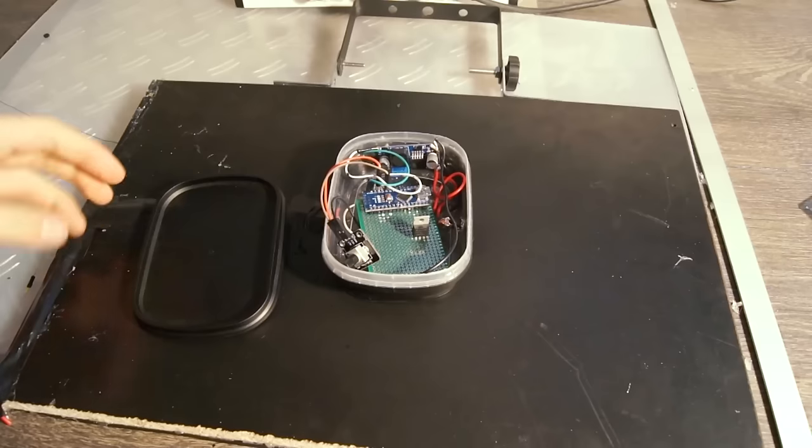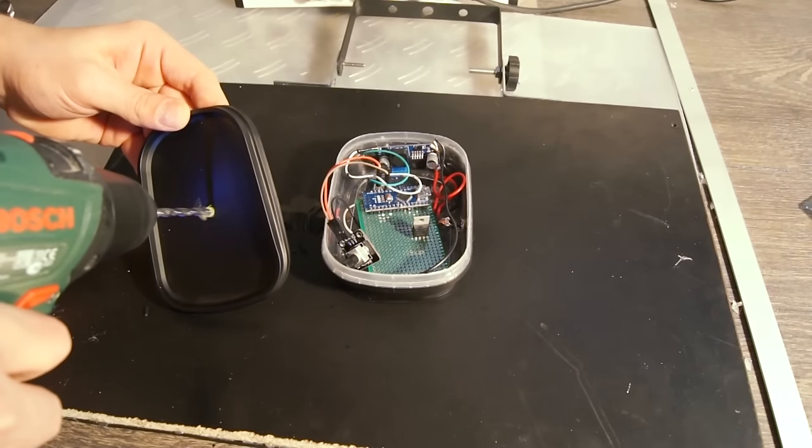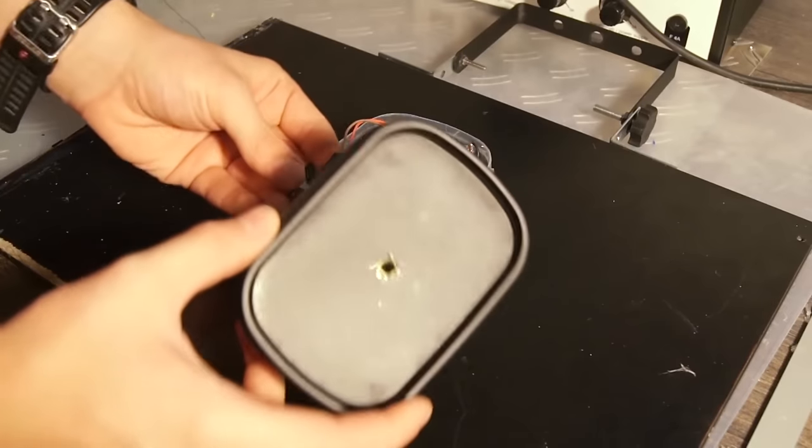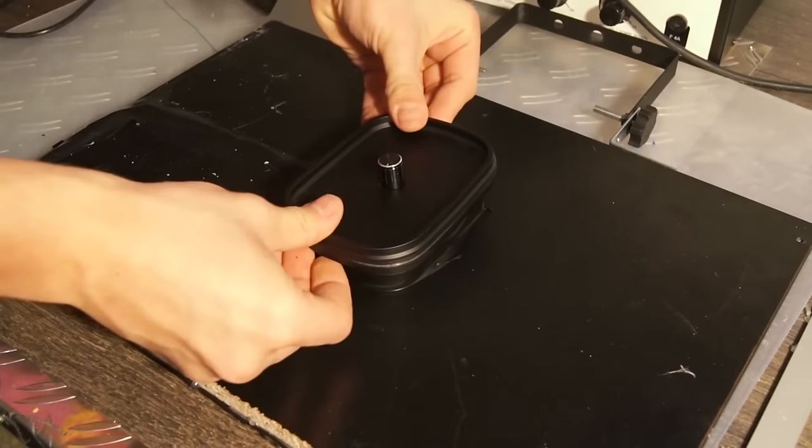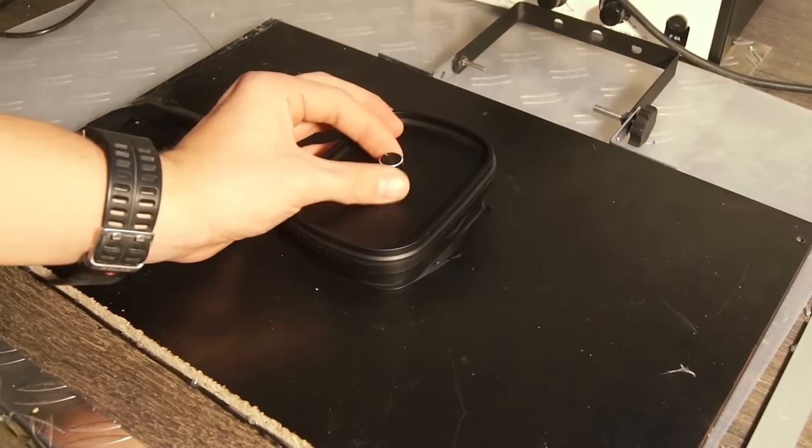I removed the knob from the potentiometer so that I could fit it through the lid. I made a hole and then put it back on. The knob moves really smoothly and the feeling of rotating it is very satisfying.